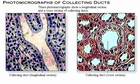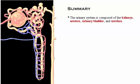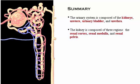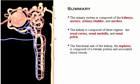In summary, the urinary system is composed of the kidneys, ureters, urinary bladder, and urethra. The kidney is composed of three regions: the renal cortex, medulla, and pelvis. The functional unit of the kidney, the nephron, is composed of a tubular portion and associated blood vessels. Each region of the tubular portion of the nephron depends on the unique features of its epithelial cells to carry out its function.